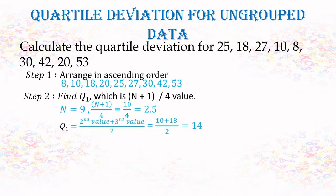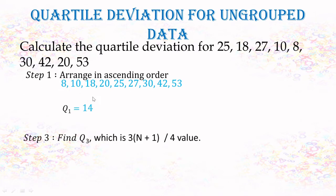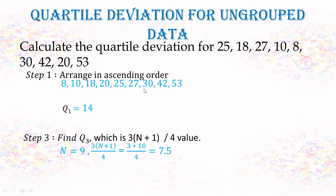Once Q1 is calculated, next we find Q3 using the formula 3(n+1)/4. With n=9, substituting gives position 7.5, which means we take the average of the seventh and eighth values.